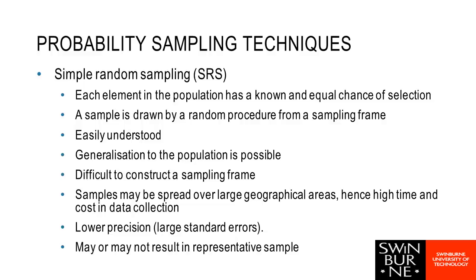For a statistician, simple random sampling is much easier to analyse than other probability methods and can be simple to do — for example, if I have a list of email addresses and randomly pick some of them. However, if I had to see people face to face across a large geographical area, such as all people in Australia, getting a full list like the electoral roll and travelling around to find random people would be very difficult and expensive, essentially impossible.